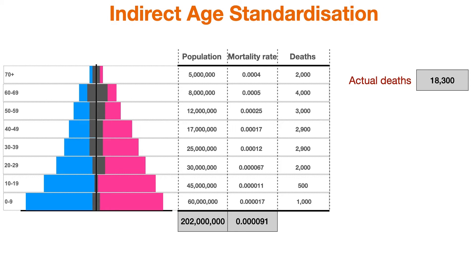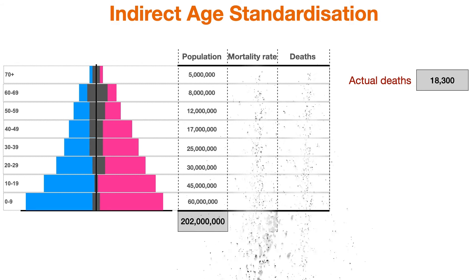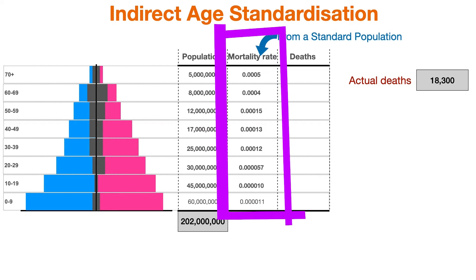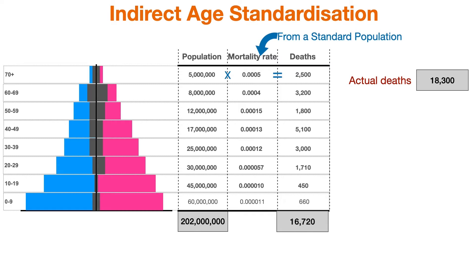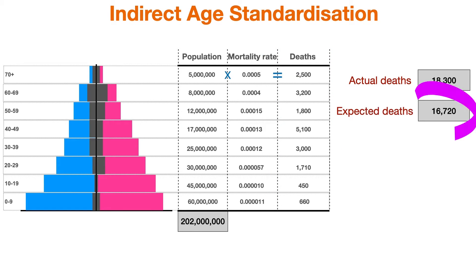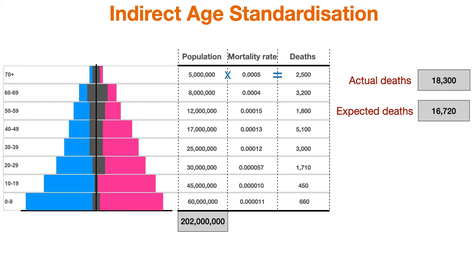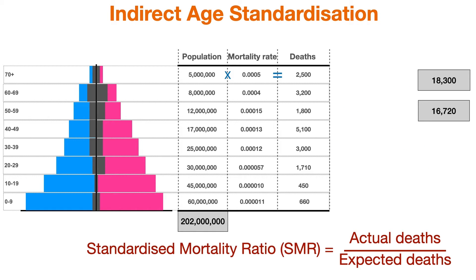We start off by noting the actual number of deaths in Ireland — the total number of deaths. And we want to know if that number is bigger or smaller than the number of deaths you'd expect if Ireland had the same mortality rate as Europe as a whole. So let's remove the Irish mortality rates and drop in a standard population mortality rate — in this case, that for Europe — and then calculate the number of deaths we'd see in each age strata and add them up. This gives us the total number of deaths we'd expect to see if Ireland had a mortality rate the same as the whole of Europe.